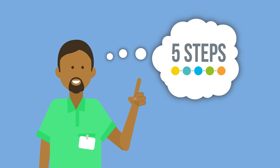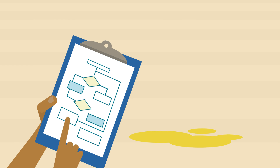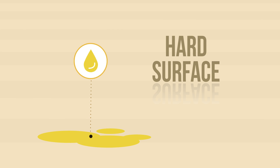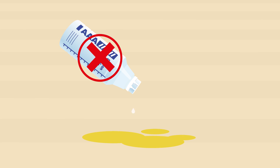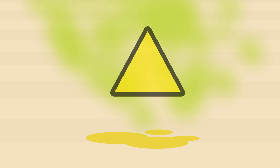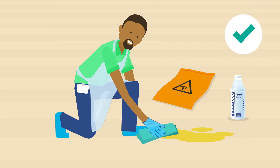Hardeep recalls the five steps. He places physical barriers around the spillage to prevent slippages and harm to other people. He consults the algorithm and assesses the spillage. The spillage is urine on a hard surface. Hardeep knows not to use chlorine releasing agent directly on the urine spillage, as it will react with the urine and release chlorine gas. He can now follow the appropriate steps to successfully manage the spillage.